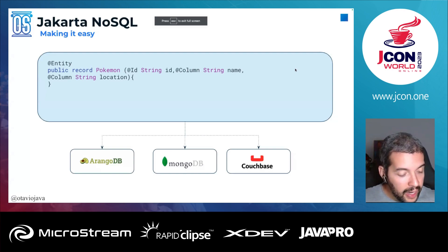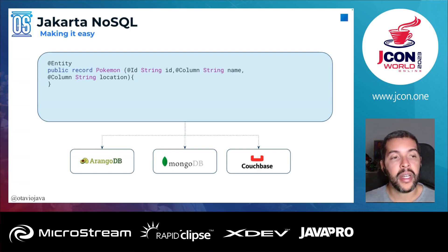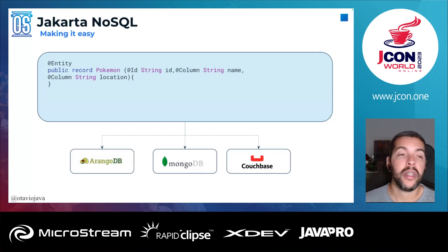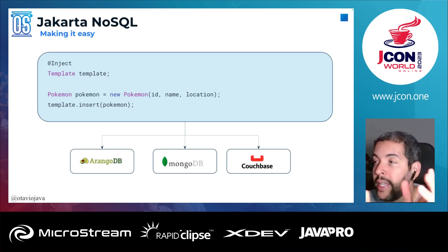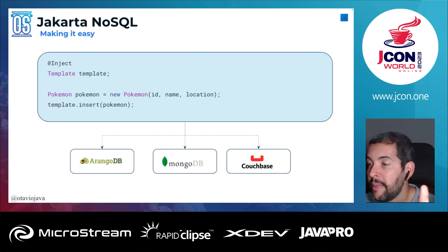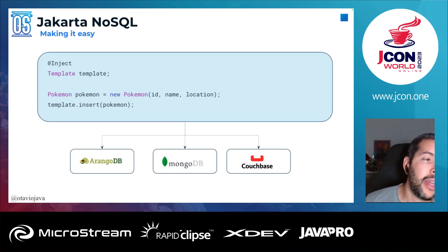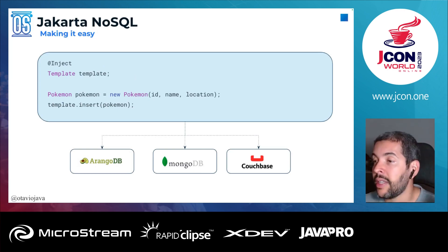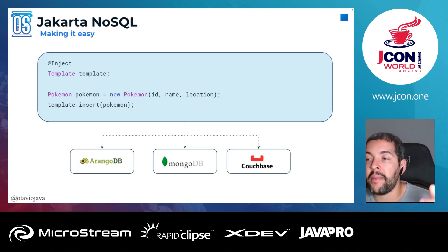I still have 15 minutes to go. Let me summarize what we did. We have the Pokemon record with the entity annotation, the ID, and the location column. We did some queries. We're still working on aggregation queries. I showed the injection of templates — the Template is the bridge between my application and the database. We have specializations: DocumentTemplate for documents, ColumnTemplate, GraphTemplate, and KeyValueTemplate. It doesn't matter which one you're using because the dialect is the same.